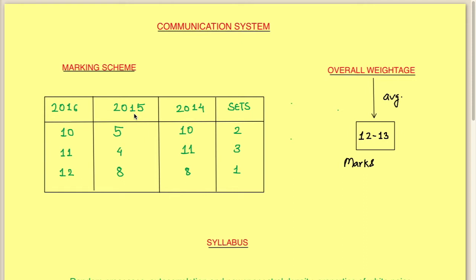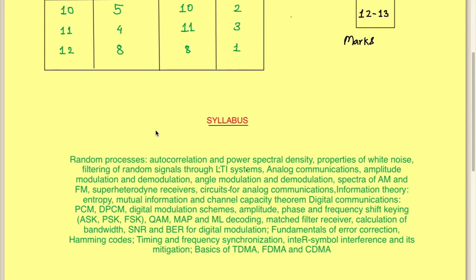On average, the overall GATE weightage for communication systems is around 12 to 13 marks. If you can secure around 12 to 13 marks in GATE from this subject, your rank will improve drastically — even for two marks the rank shifts from the 2000 to 3000 range. This syllabus also covers university exams, so you can prepare for both GATE and your university examination from these lectures.